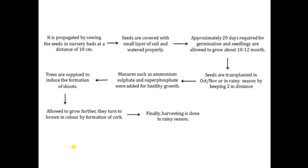In the cultivation flowchart: seeds are sown by keeping a distance of 10 cm and covered in a small layer of soil and watered properly. Approximately it requires 20 days for complete germination, and seedlings are allowed to grow for about 10 to 12 months. Then seeds are transplanted in the field by keeping a distance of 2 meters, in the month of October, November, and the rainy season.